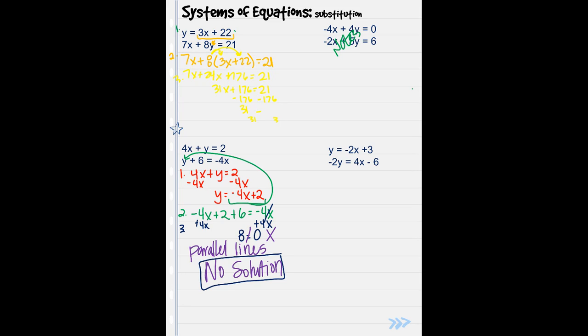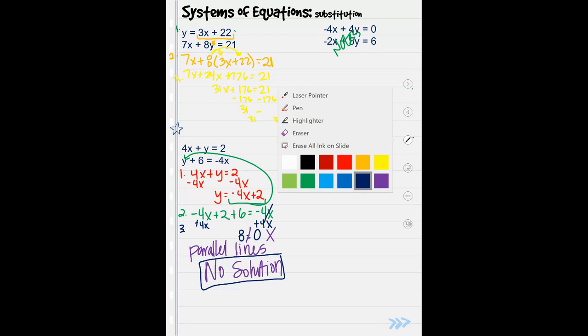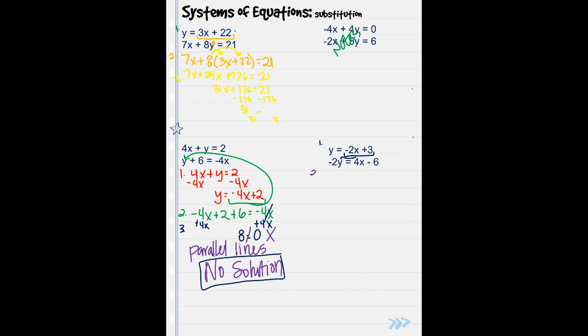Let's do this last example. Look, lucky you, step number one is already done for you. We've got one equation already solved for a variable. So I can take that whole equation and plug it in for y of the other equation. So step number two, negative two, now instead of y I'm plugging in that full equation equals 4x minus 6.